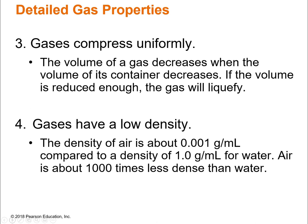Gases have a low density. We talked about density in chapter two and brought it back in chapter eight when we talked about gas density. The density of air is 0.001 grams per milliliter. When you compare that to the density of water, which is 1 gram per milliliter, air is 1,000 times less dense than water. So when we say low density, we mean low.